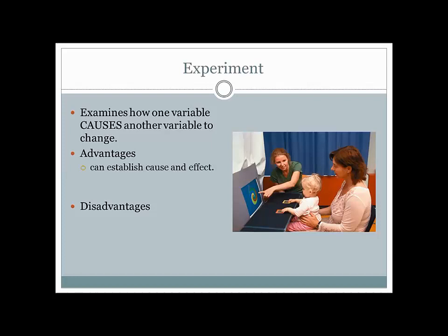When conducting an experiment, you control as many outside influences as possible. With these influences ruled out, you're able to conclude that the only reason two groups are different is the one thing you allowed to be different between them — the independent variable that you manipulated. Other variables that could be having an impact on the dependent variable are either controlled, meaning set to be constant across all groups, or they're considered confounds.